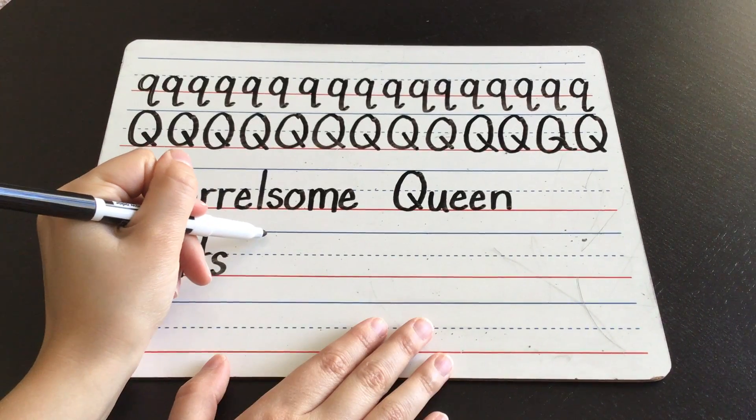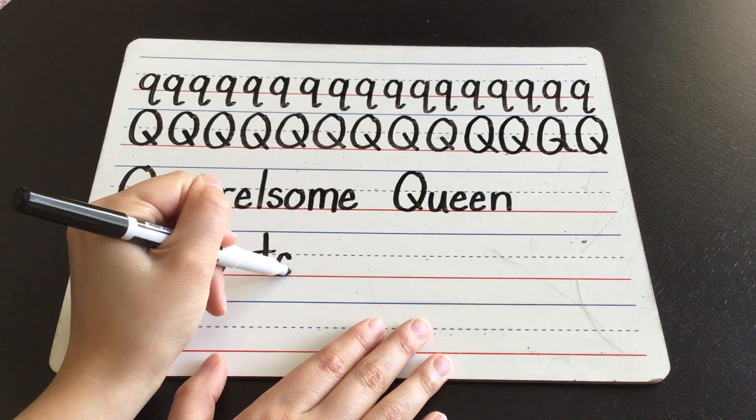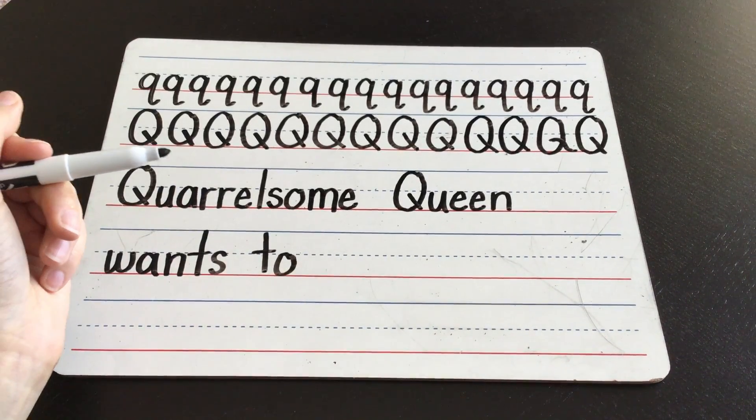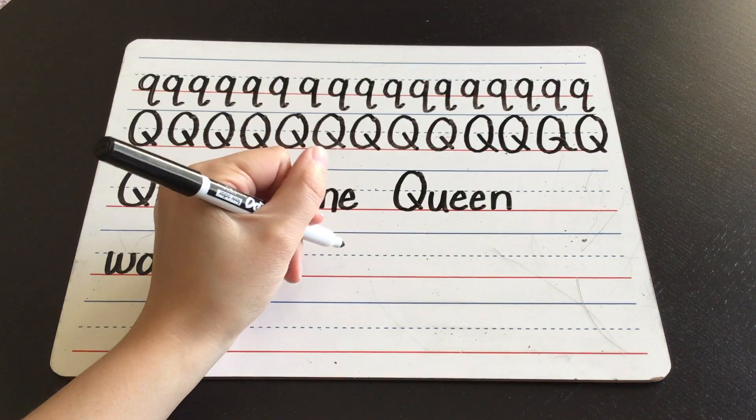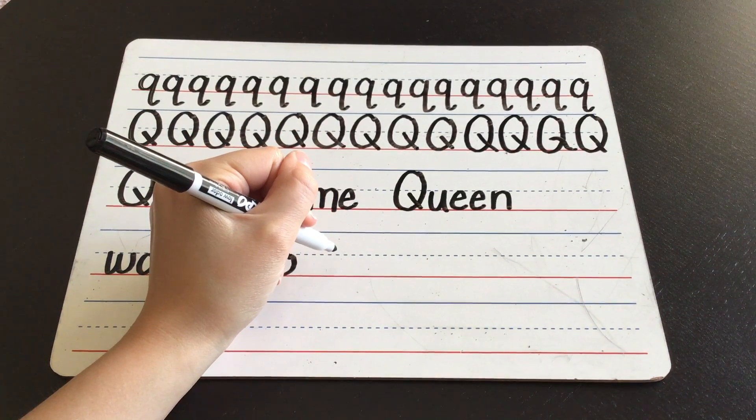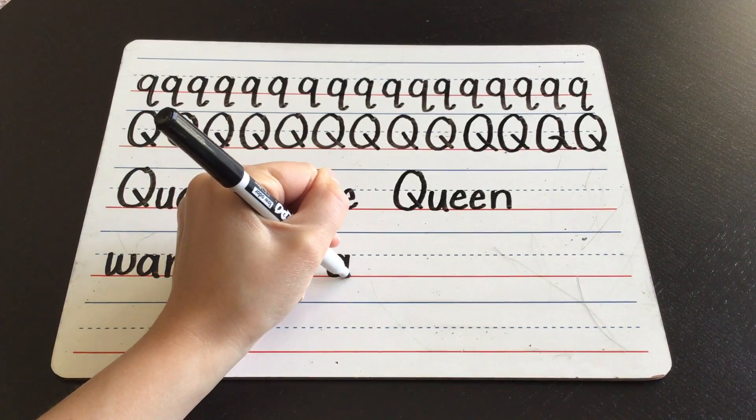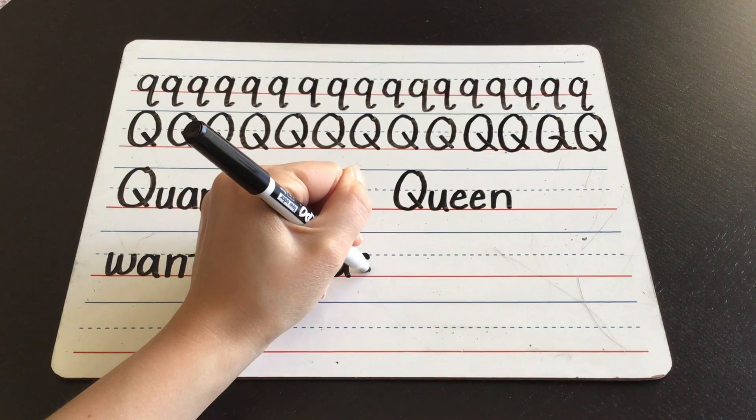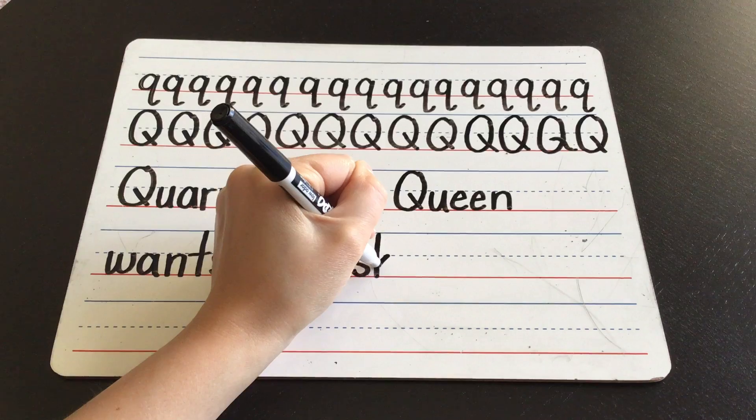Two, so we need a space. Two, T, and then an O, making that O sound. Quarrelsome queen wants to ask. All three letters in the word ask say their sound, right? Ah, ah, ssss. And then it's a K making that K, K sound.